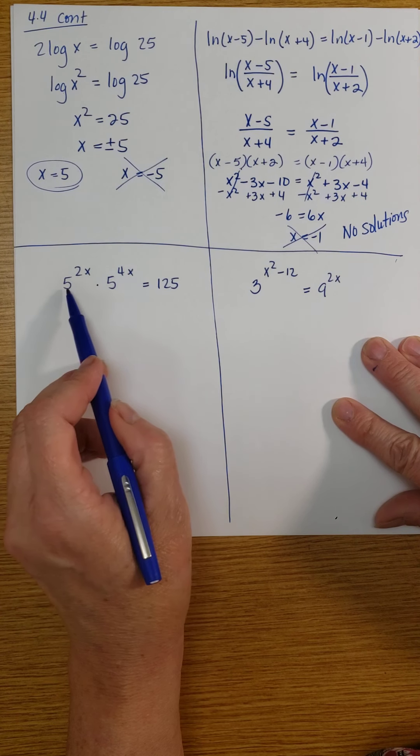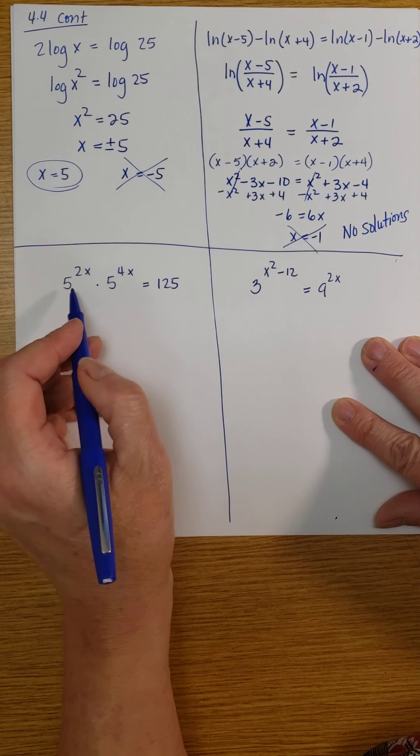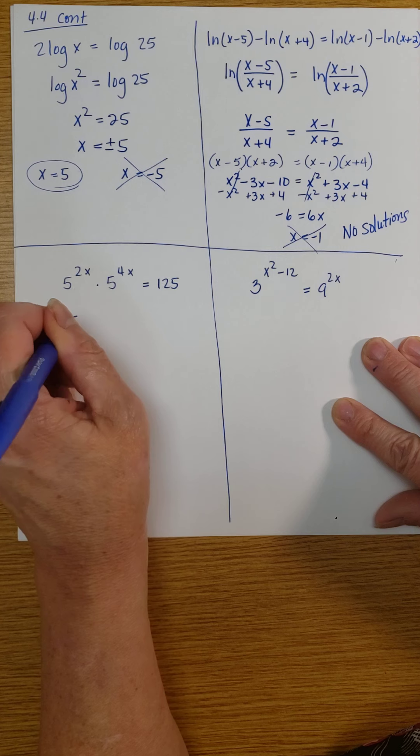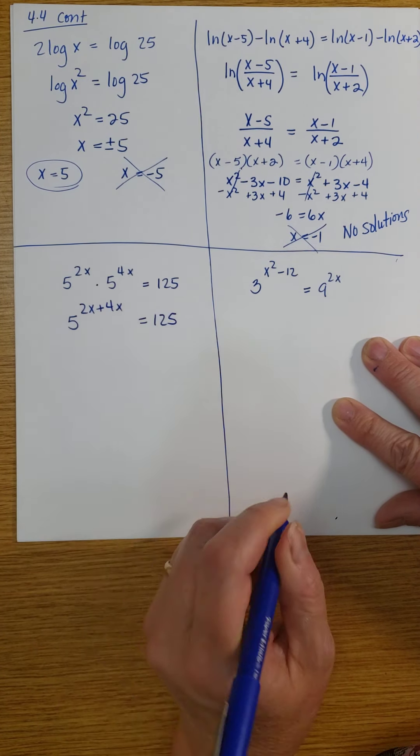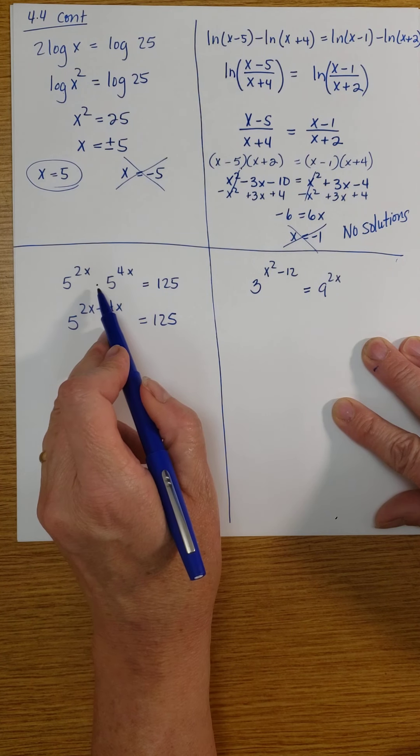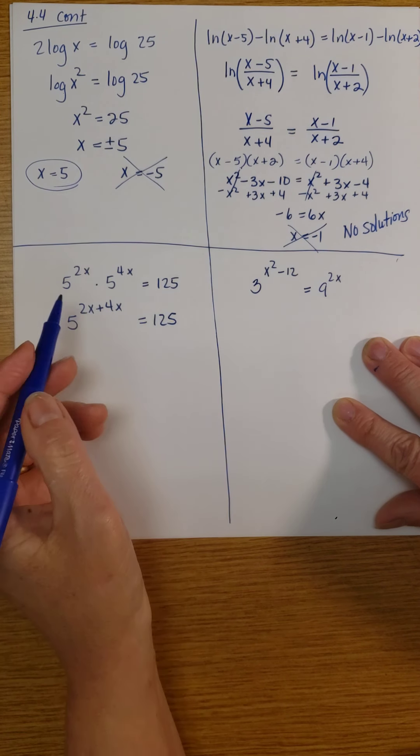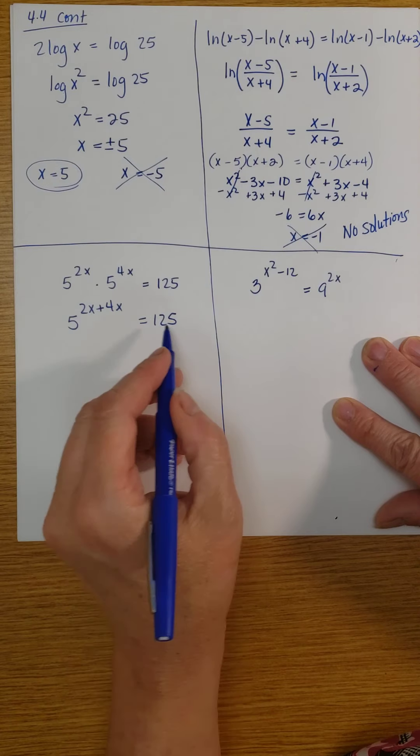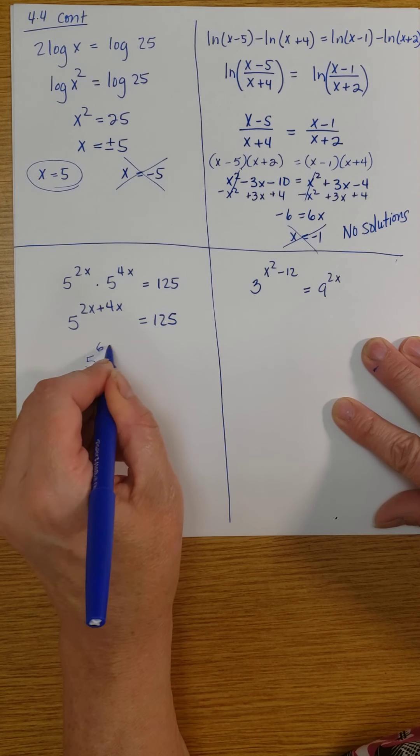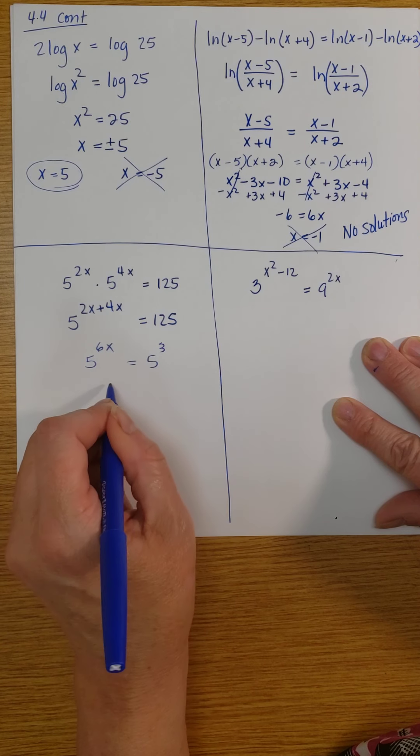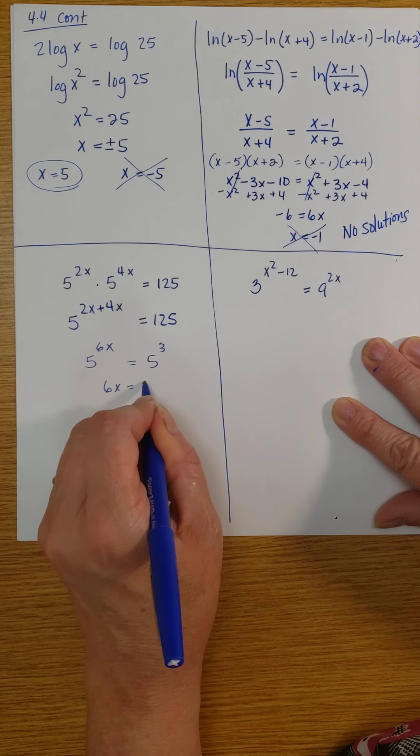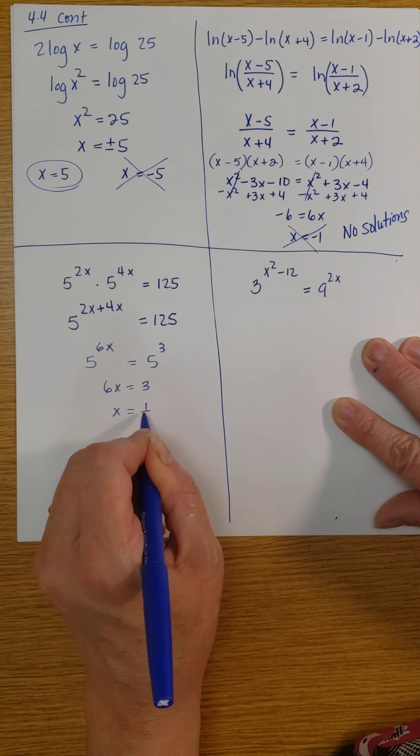Here, I can combine these because they have the same base. So this becomes 5 to the 2x plus 4x equals 125. Remember, you add the exponents when you multiply. And this becomes now 5 to the 6x. 125 is just 5 cubed. So 6x equals 3, or x is 1 half.